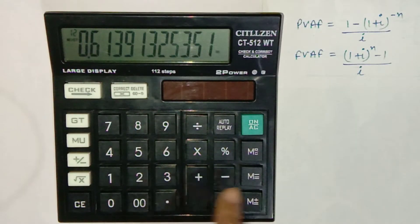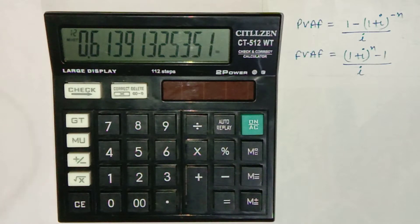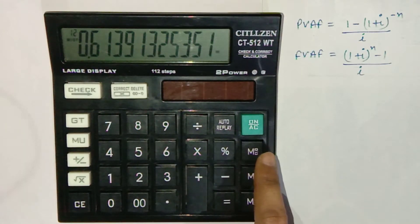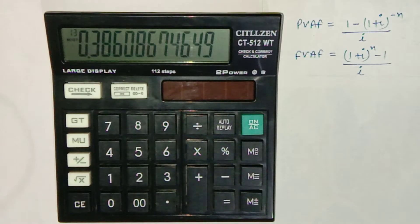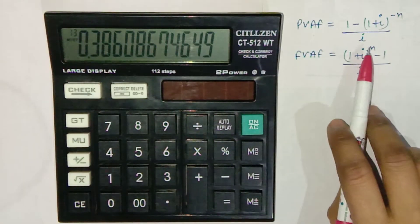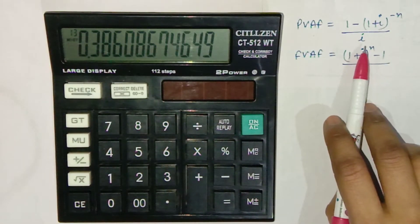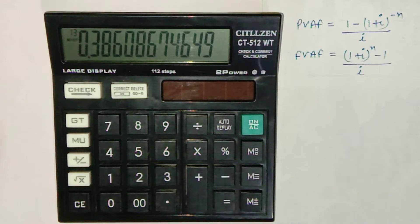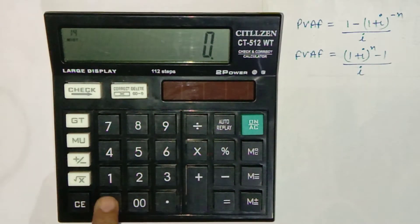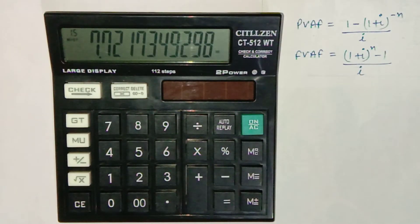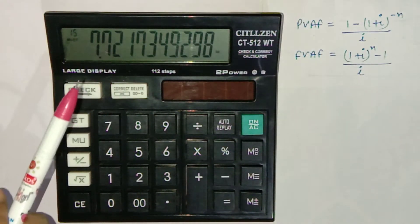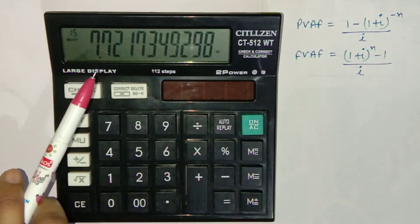This term is to be subtracted from the memory, so press M minus to subtract it from the memory. Now to extract what is left in the memory, press MRC. Then divide this by i, which is 5% in our case, so divide by 0.05 and press equals. This is the present value annuity factor when i is 5% and n is 10.